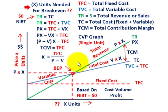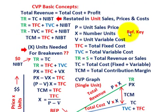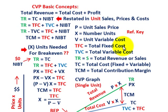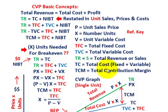We'll go through this graph and based on the relationships, determine the quantity of units they have to sell to break even. First, let's look at the reference key: P is the unit sales price, X is the number of units sold, V is the unit variable cost, TFC is total fixed cost, TVC is total variable cost, TR equals sales or total revenue, TC is total cost, and TCM is total contribution margin.